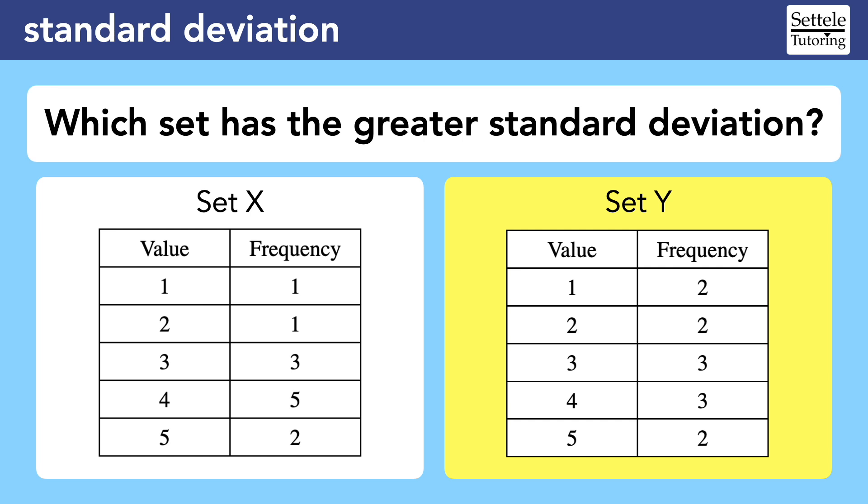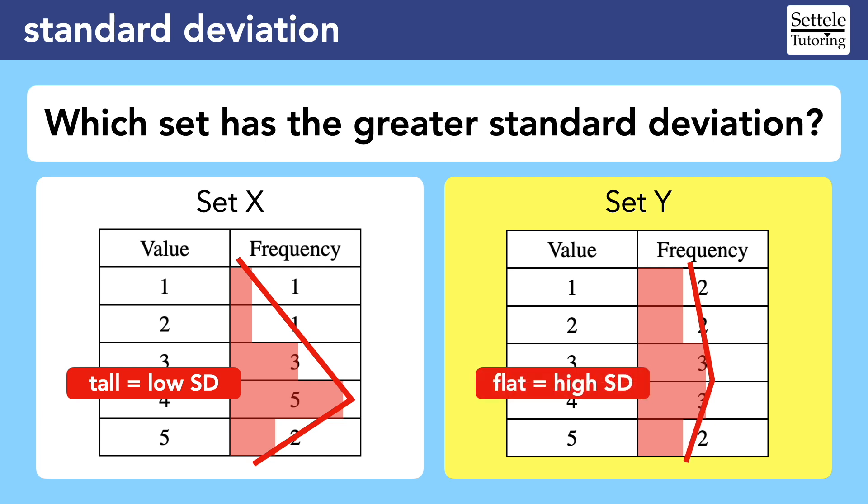If you have trouble seeing the difference on a frequency chart, try to turn it into a histogram. Use your scratch paper to draw bars for each value. You can even do it horizontally in the chart itself. Now, the tall peak of set X is much more noticeable, as is the flatness of set Y.